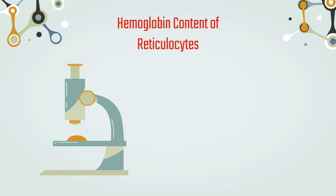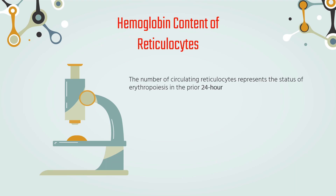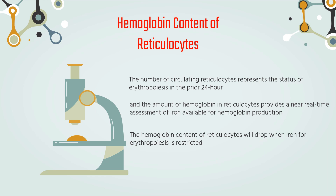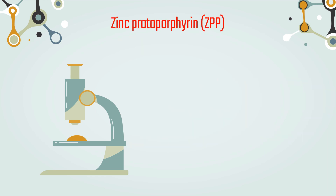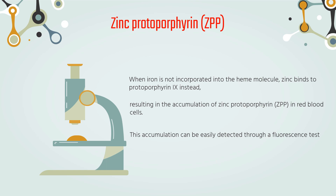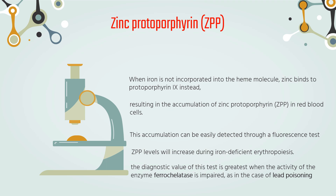Hemoglobin Content of Reticulocytes. Under normal conditions, the number of circulating reticulocytes represents the status of erythropoiesis in the prior 24-hour period, and the amount of hemoglobin in reticulocytes provides a near real-time assessment of iron available for hemoglobin production. The hemoglobin content of reticulocytes will drop when iron for erythropoiesis is restricted. Zinc Protoporphyrin: when iron is not incorporated into the heme molecule, zinc binds to protoporphyrin-9 instead, resulting in the accumulation of zinc protoporphyrin in red blood cells. This accumulation can be easily detected through a fluorescence test. While zinc protoporphyrin levels will increase during iron-deficient erythropoiesis, the diagnostic value of this test is greatest when the activity of the enzyme ferrochelatase is impaired, as in the case of lead poisoning.